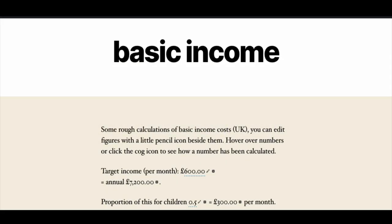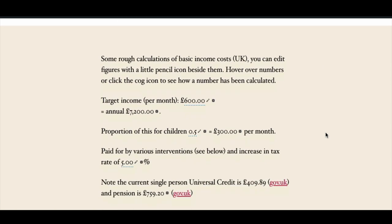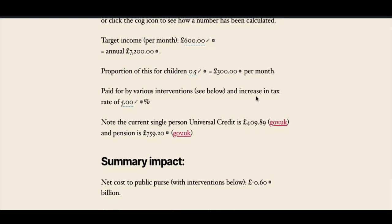What we've got here is a WordPress page, and it's got the WS2 plugin installed, which allows it to function a bit like a spreadsheet on a web page. If we look down the page, we can see numbers. It's about calculating basic income and working out its impact on individuals and on the economy.